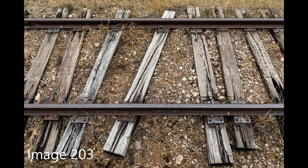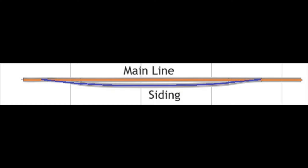Sidings: switches on both ends, usually parallel to an active track. An auxiliary track for meeting and allowing trains to pass. It is designated in special instructions to train crews.